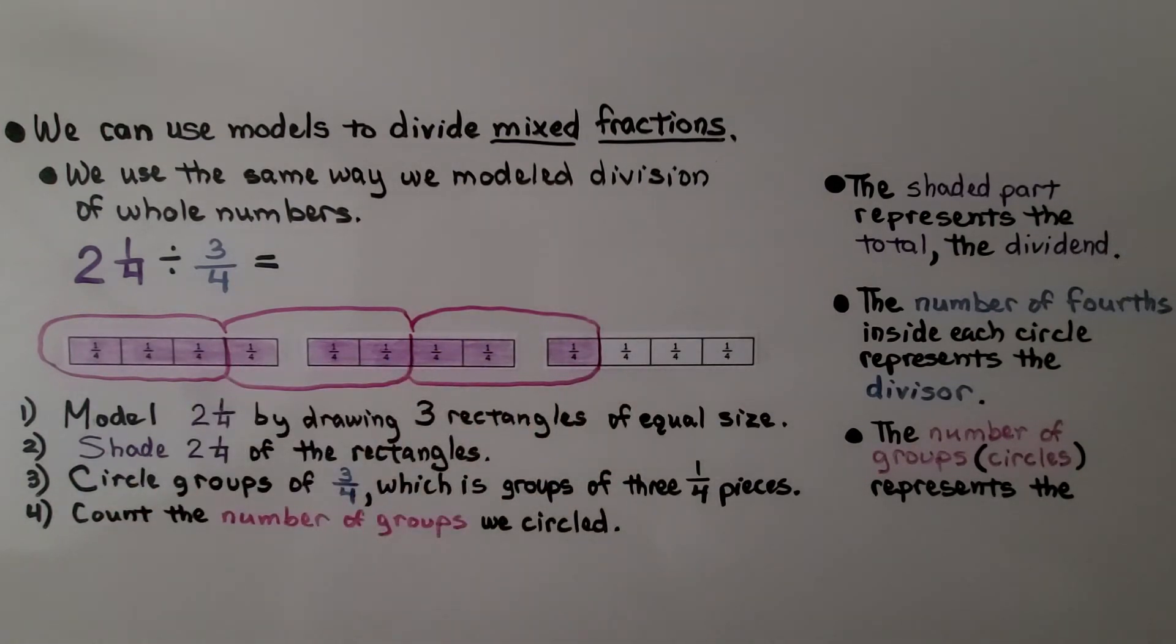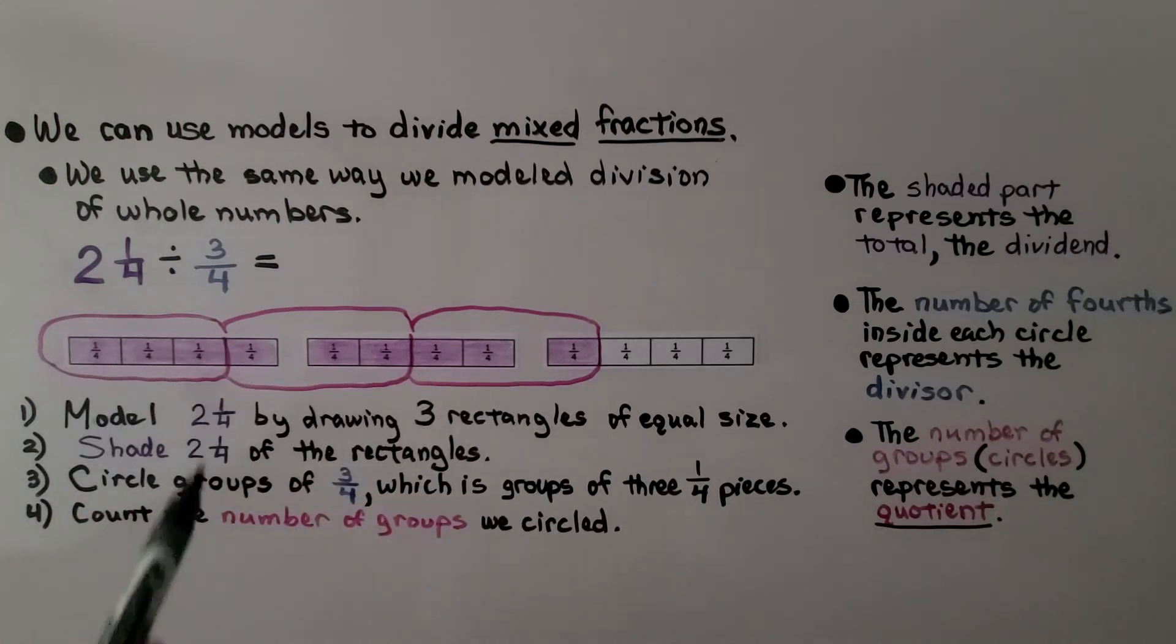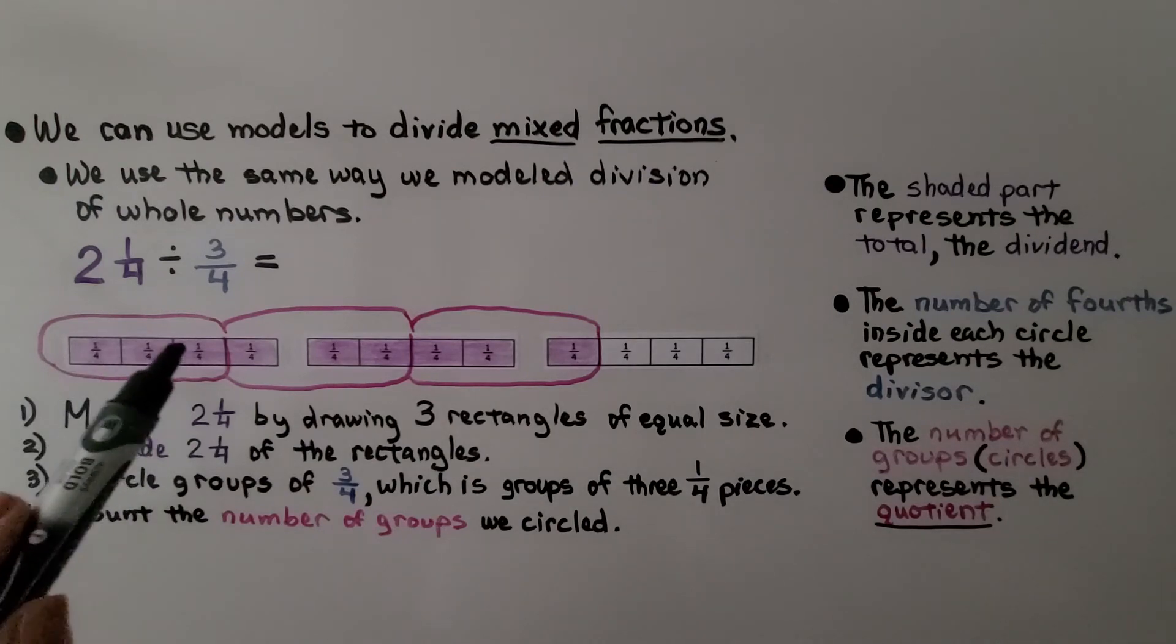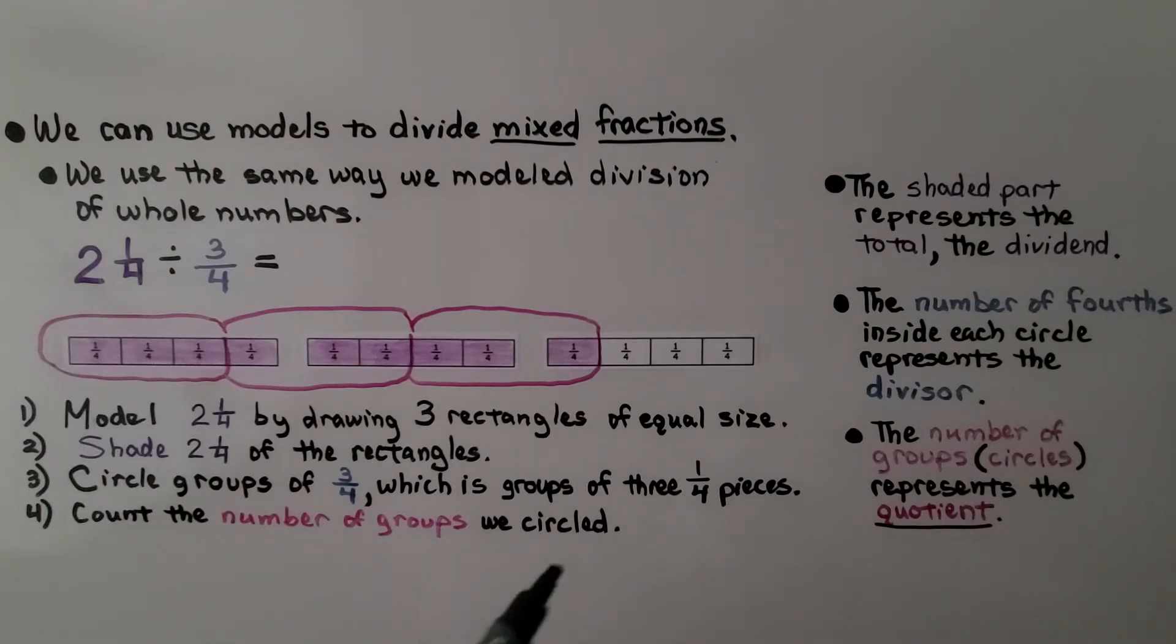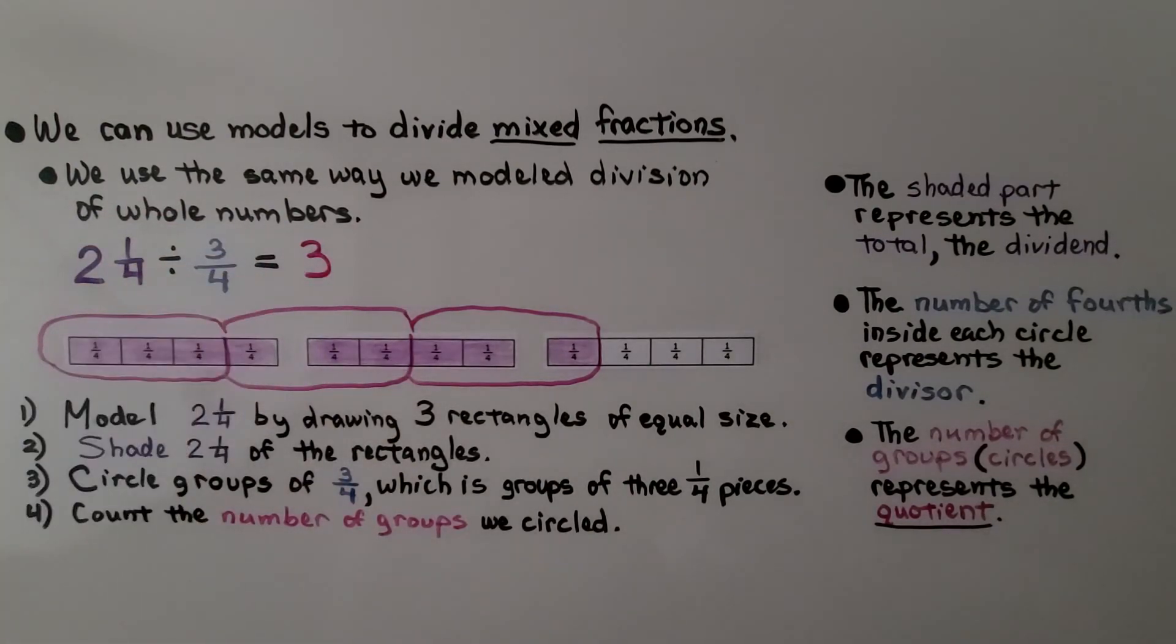The number of groups, the number of circles we made represents the quotient. We model two and one-fourth by drawing three rectangles of equal size. We shade in two and one-fourth of the rectangles. We circle groups of three-fourths, which is groups of three one-fourth pieces. Then we count the number of groups we circled. Two and one-fourth divided by three-fourths is three. We have three circles, three groups.